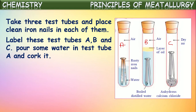With the labels A, B, C, let us pour some water in test tube A, in which the iron nails are kept. In the first test tube, let us pour some water along with the iron nails and let us cork it.